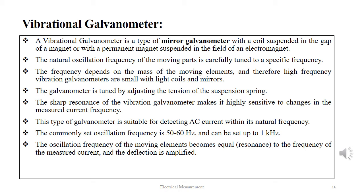A vibrational galvanometer is a type of mirror galvanometer with a coil suspended in the gap of a magnet, or with a permanent magnet suspended in the field of an electromagnet. The natural oscillation frequency of the moving parts is carefully tuned to a specific frequency depending on the mass of the moving element; high frequency vibration galvanometers are small with light coils and mirrors. The galvanometer is tuned by adjusting the tension of the suspension spring. The sharp resonance makes it highly sensitive to changes in the measured current frequency. This device is suitable for detecting AC current within the natural frequency as well as DC, with a commonly set oscillation frequency of 50 to 60 Hz and up to 1 kHz.